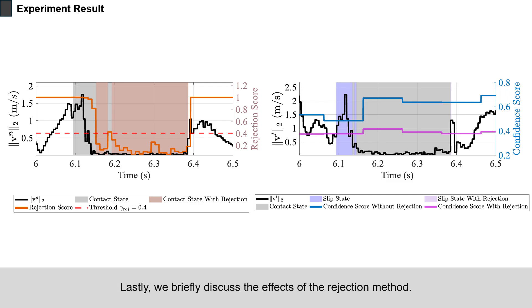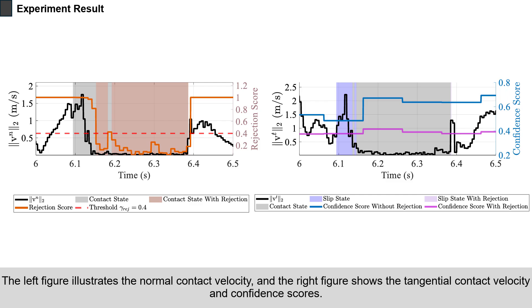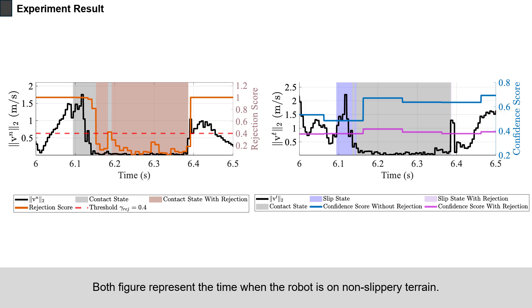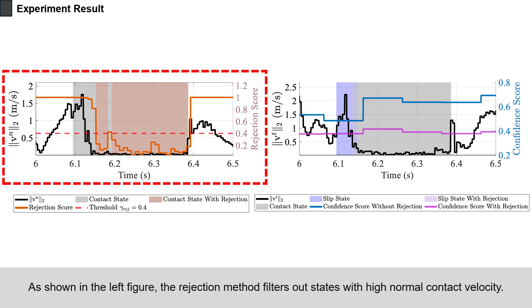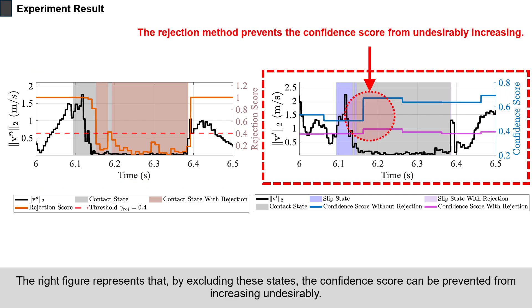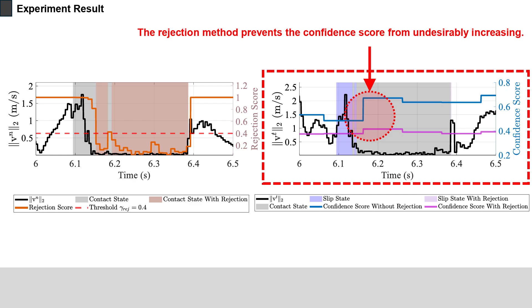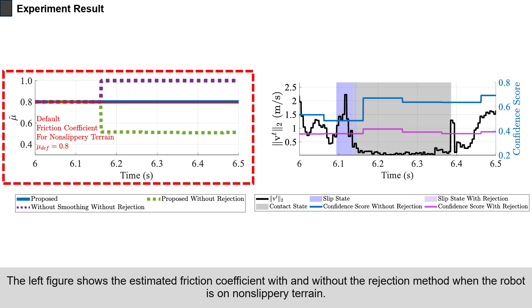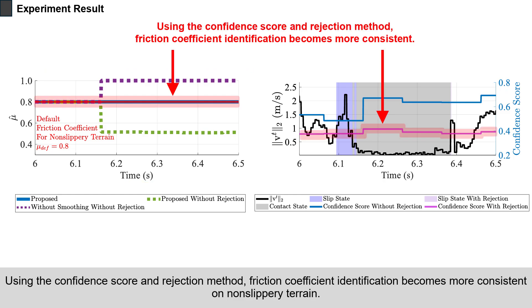Lastly, we briefly discuss the effects of the rejection method. The left figure illustrates the normal contact velocity, and the right figure shows the tangential contact velocity and confidence scores, both representing the time when the robot is on non-slippery terrain. As shown in the left figure, the rejection method filters out states with high normal contact velocity. By excluding these states, the confidence score can be prevented from increasing undesirably. Using the confidence score and rejection method, friction coefficient identification becomes more consistent on non-slippery terrain.